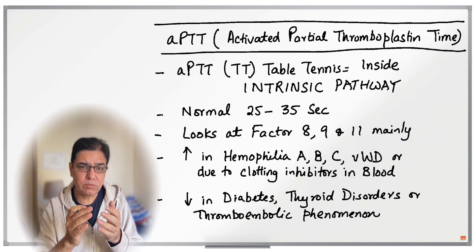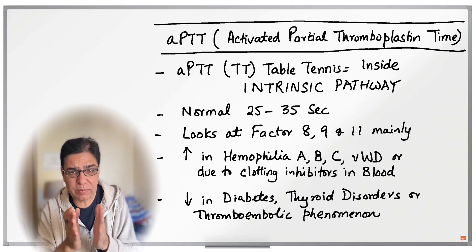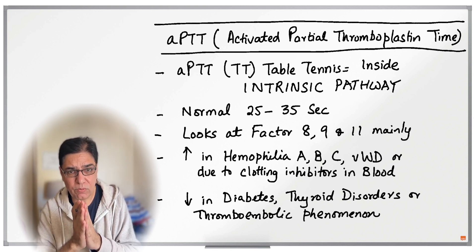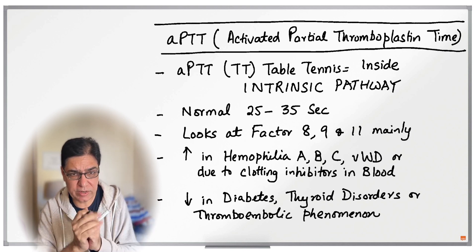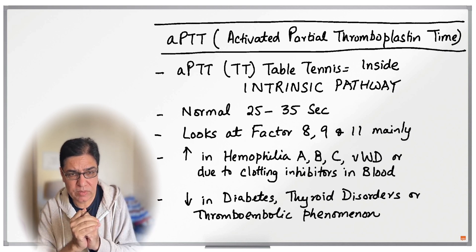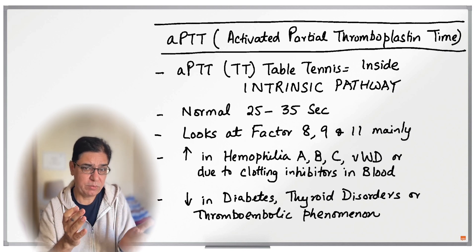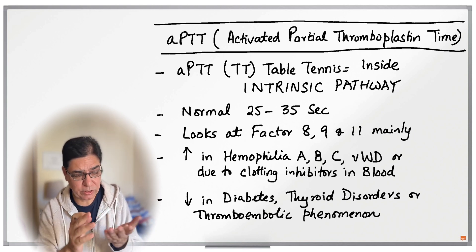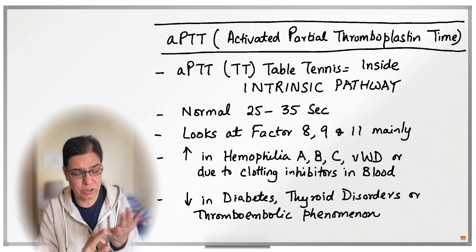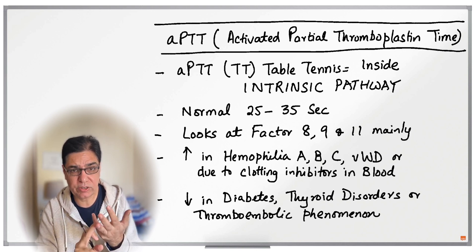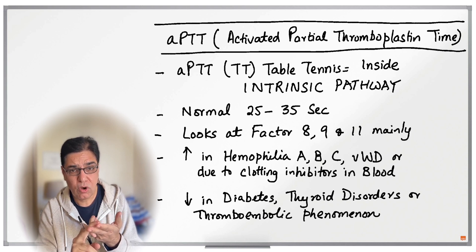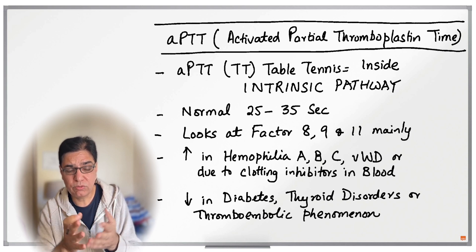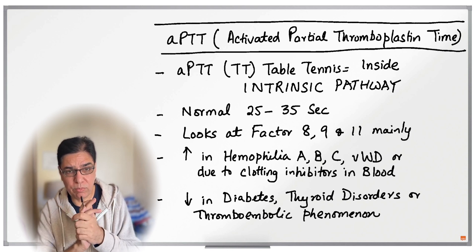APTT can sometimes also be prolonged in von Willebrand disease because von Willebrand factor is closely associated with factor 8. It can sometimes be low in cancer patients, in severe infections, in diabetes, and sometimes in liver and thyroid disorders, or in patients who have some thromboembolic phenomena.